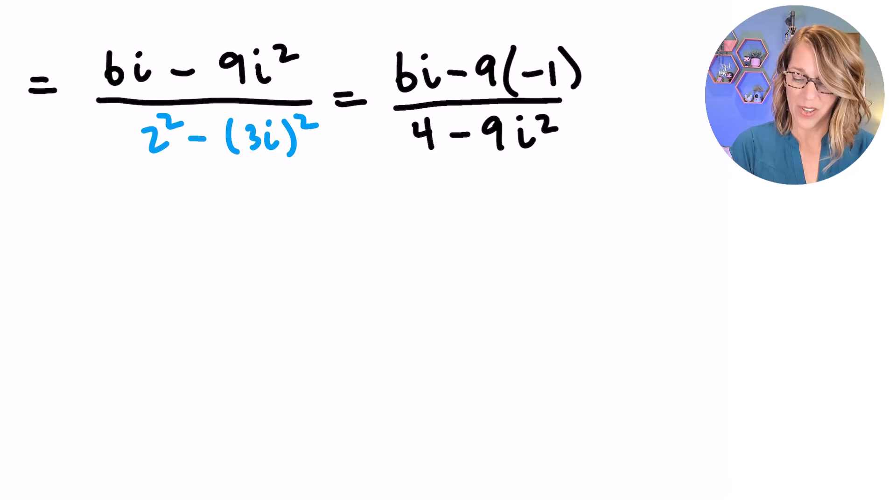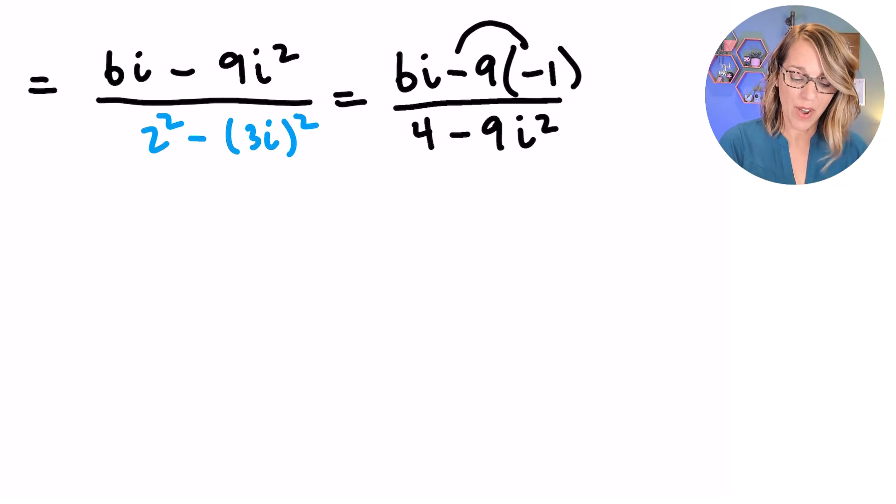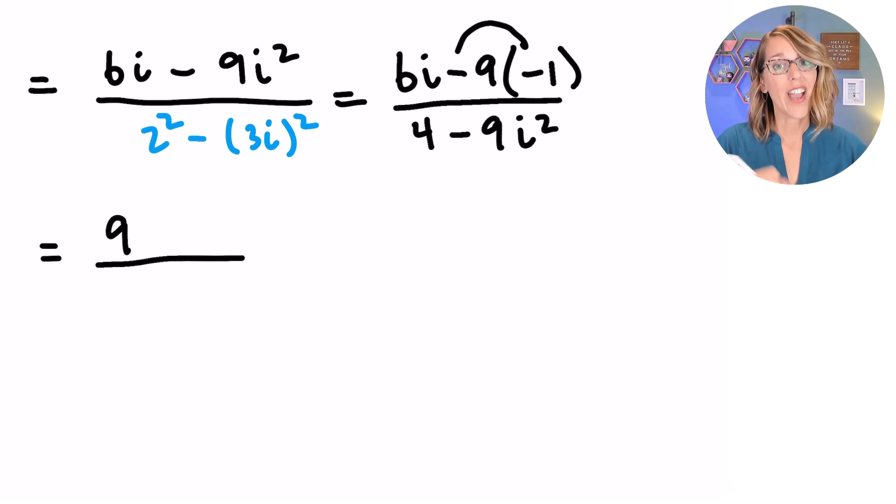Now we are really close. In my numerator, let's grab the real part first, so the part without an I. That's going to be my negative 9 times negative 1, which is positive 9. So in that numerator, I've got a positive 9, and then I also have a positive 6I, so plus 6I.